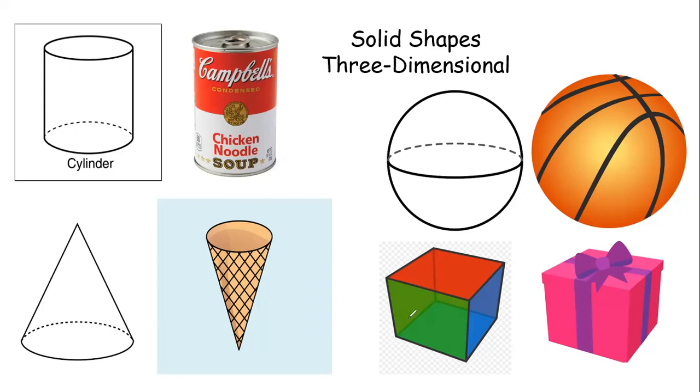And my last shape is a cube. A cube again kind of looks like a square, but it is 3D or solid and it can take up space. Something can be inside of it, just like a birthday present. That box can have a present inside for us. So those are 3D shapes.